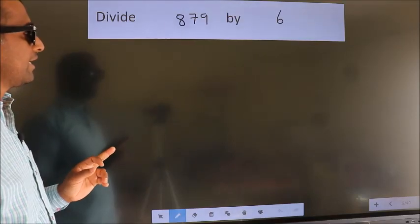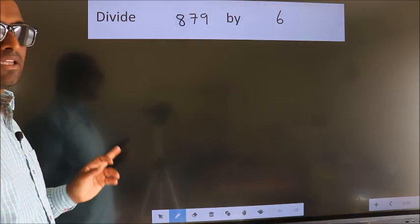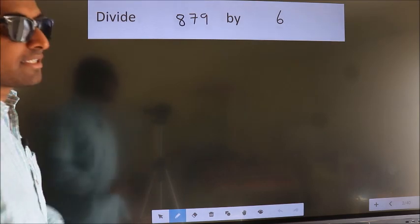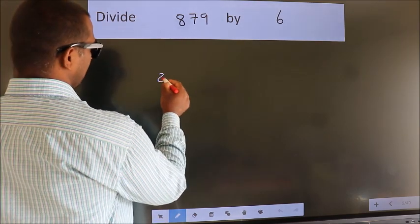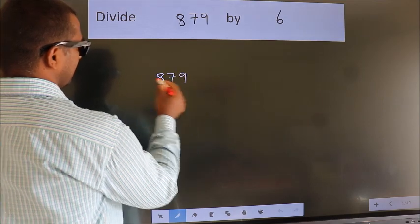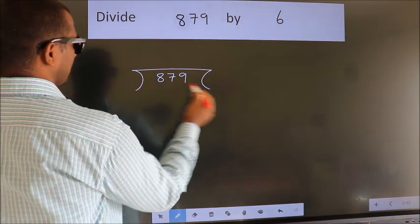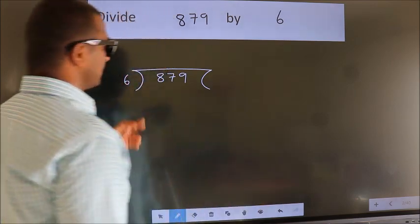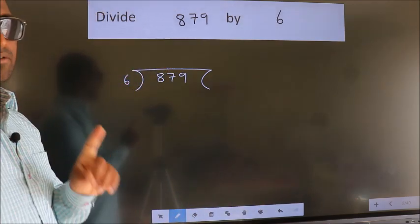Divide 879 by 6. To do this division, we should frame it in this way. 879 here, 6 here. This is step 1.